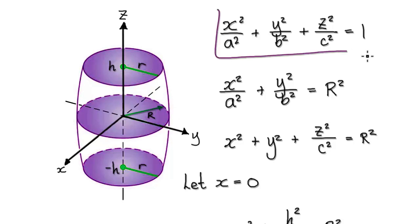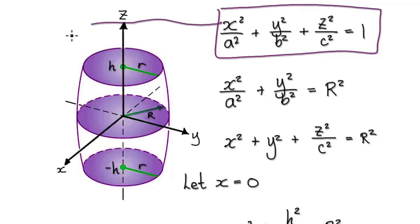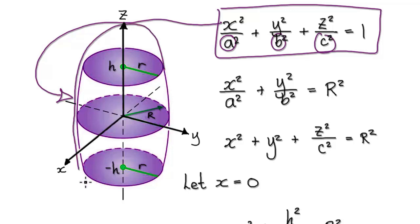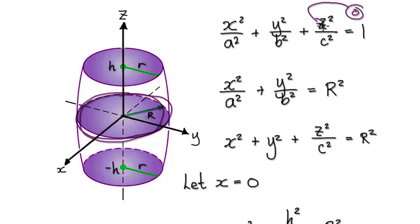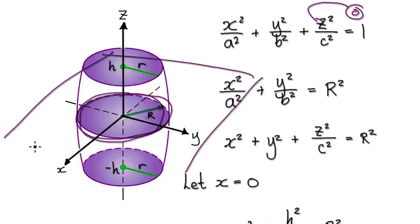We've seen that an equation of this form gives us an ellipsoid. Our job is to find a, b, and c to give us an equation for this ellipsoid. Looking at this circle, when you set z to be 0, you're really looking at a plane at a height of 0.